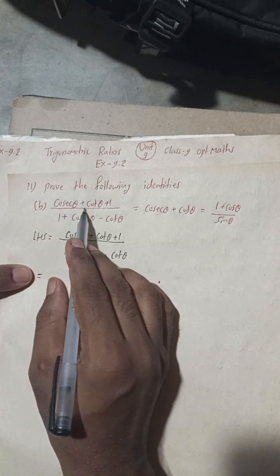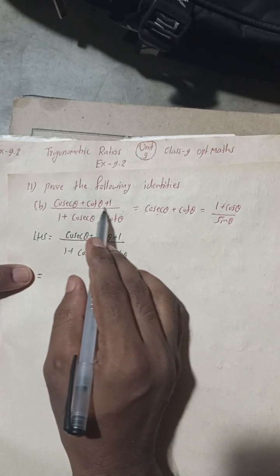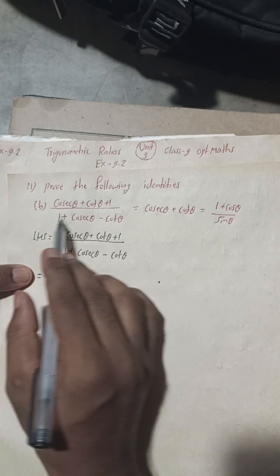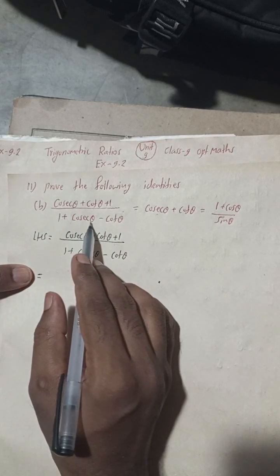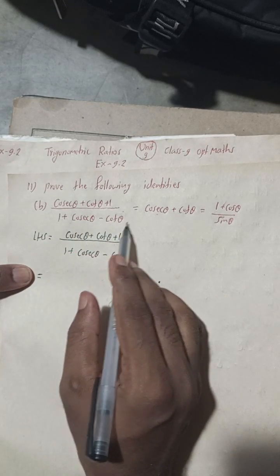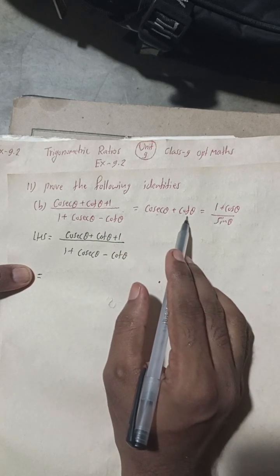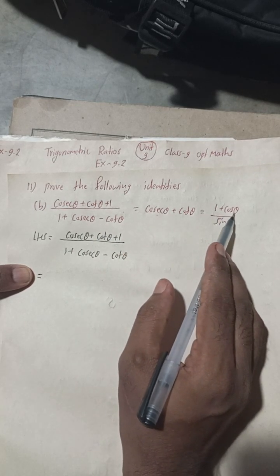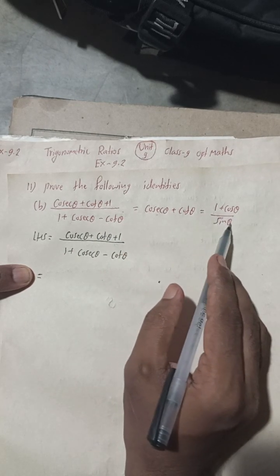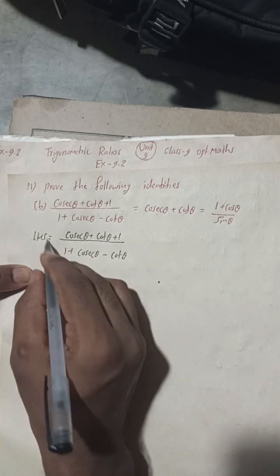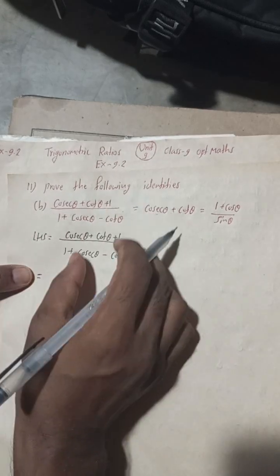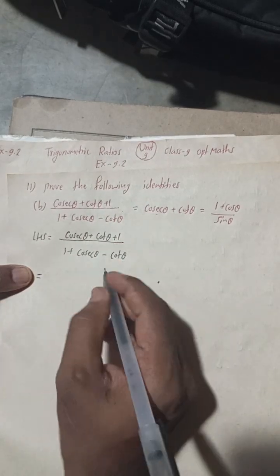The question is: (cosec θ + cot θ + 1) divided by (1 + cosec θ − cot θ) is equal to cosec θ + cot θ, which equals (1 + cos θ) / sin θ. For the LHS, I have taken this part here.